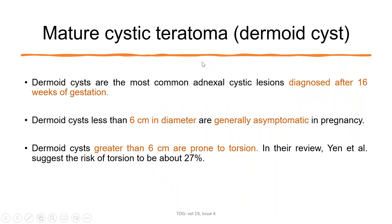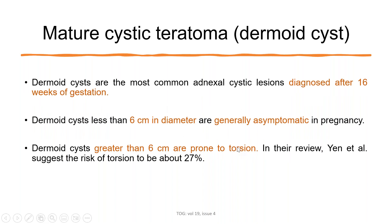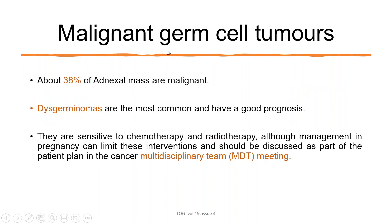Mature cystic teratoma is the commonest adnexal cystic mass after 16 weeks of pregnancy. Dermoid cysts less than 6 cm are generally asymptomatic, but if more than 6 cm, there is a higher chance of torsion — with an overall incidence of about 27%. Malignant germ cell tumors account for 38% of malignant adnexal masses, and the most common is dysgerminoma, which has a very good prognosis. Management should be discussed in MDT, and most germ cell tumors are sensitive to chemotherapy and radiotherapy.